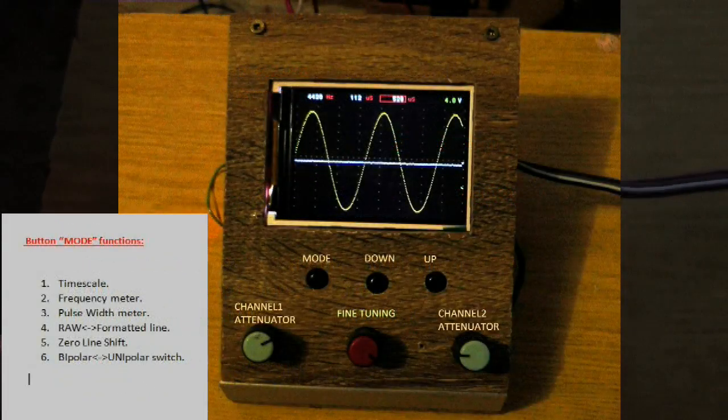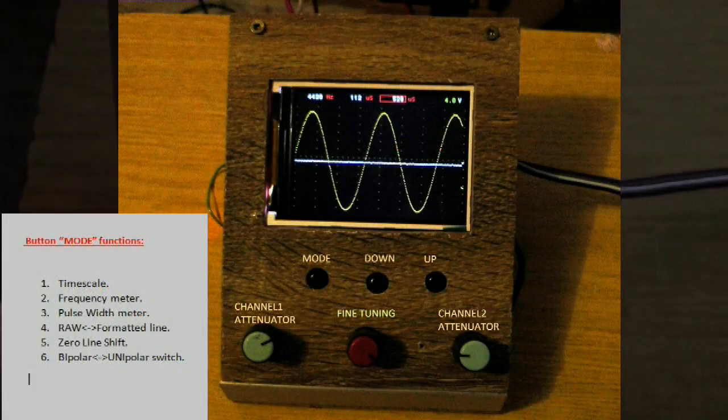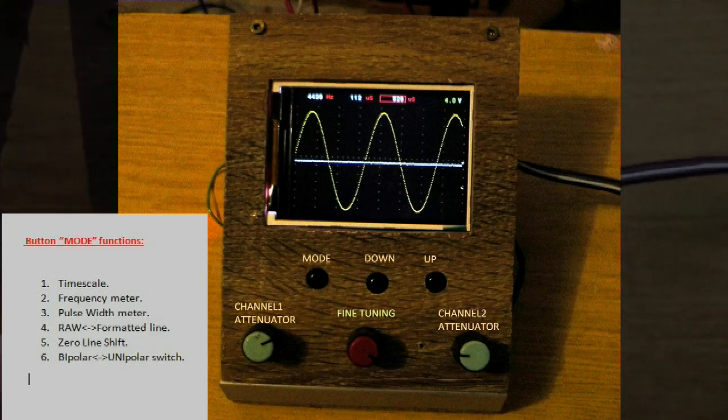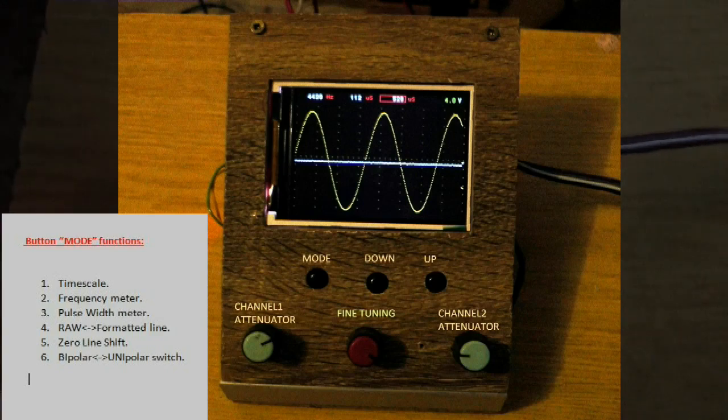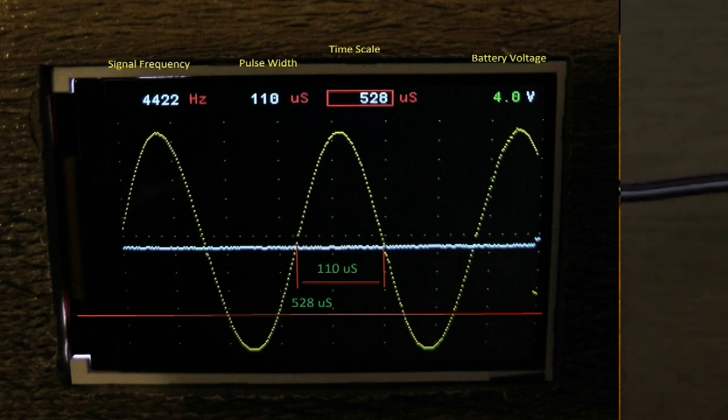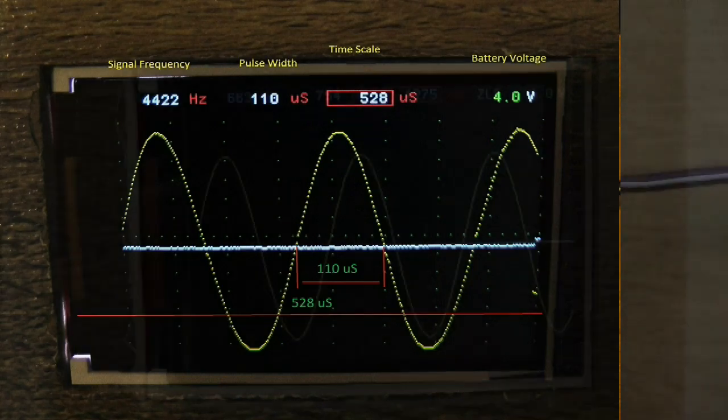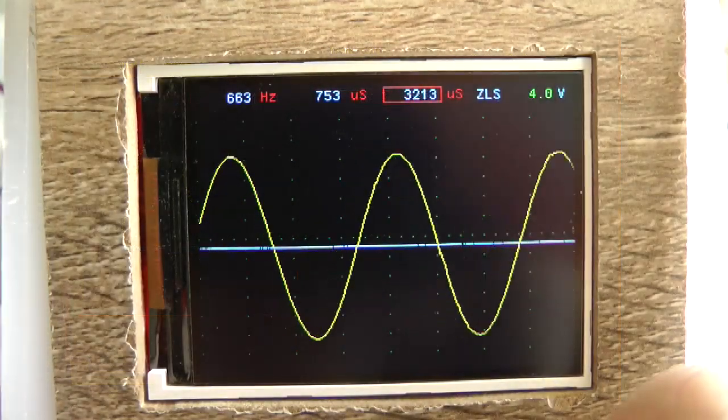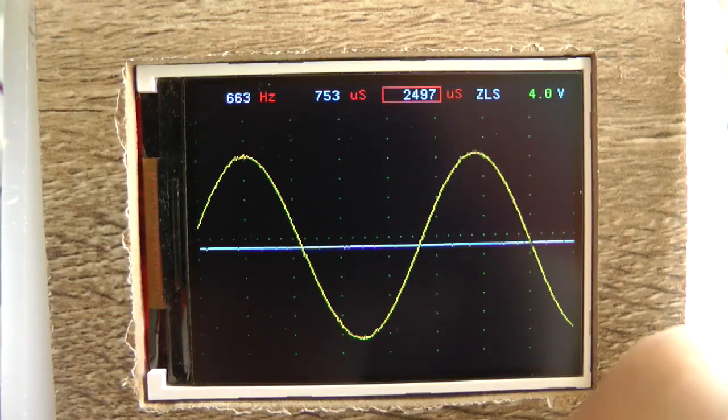The oscilloscope controls consist of three buttons and three potentiometers. Figures on the top of display show values of input signal frequency, input signal pulse width, time scale, battery voltage and some extra information.